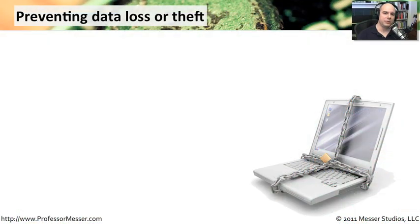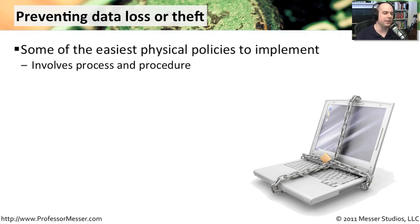One of the challenges we have with risk mitigation is making sure that we don't lose resources. If we have data loss, if we have theft, it's becoming a big concern — and it's getting bigger and bigger all the time because we have more and more data on the network than we've ever had before. So from a physical perspective, it's a relatively easy set of policies to put in place.